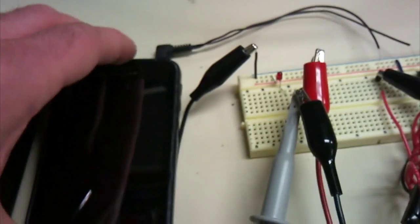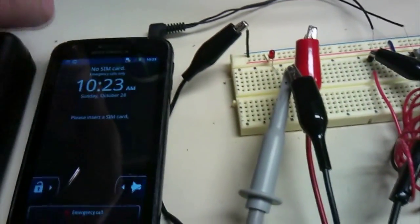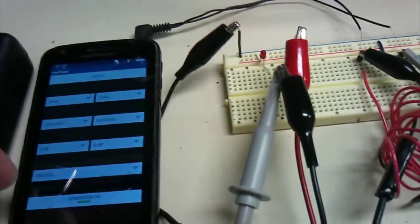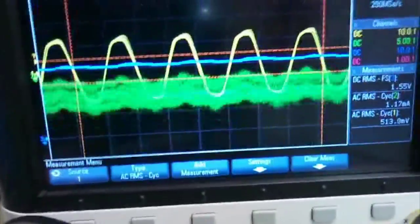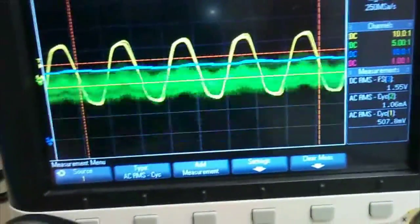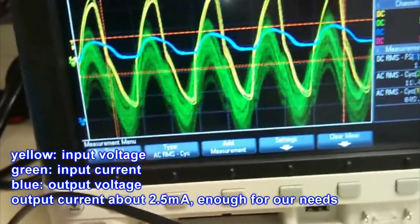Let's turn that on and have a look at the input and output signals. The yellow waveform is the input voltage, the green is the input current. The blue is the output voltage and we see that the input current waveform is typical for diode rectifiers.